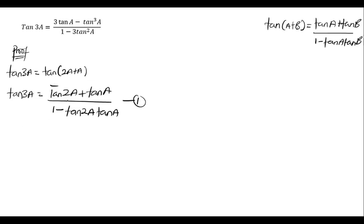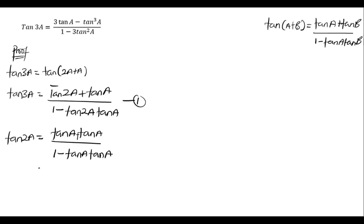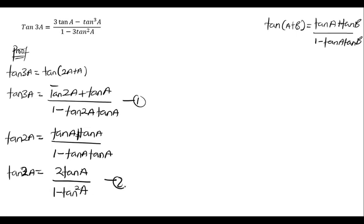But tan 2a over here can further be simplified. We have tan 2a equal to tan a plus tan a, all divided by 1 minus tan a times tan a. So tan 2a equals 2 tan a divided by 1 minus tan squared a. We call this equation 2.